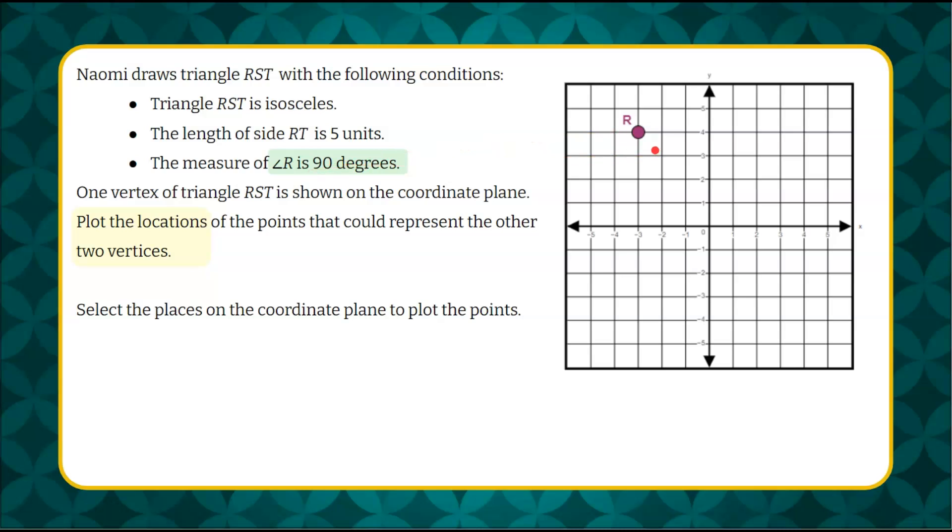So I know that when we go to draw in our sides, our line segments for the sides of triangle RST, that this angle formed by the two segments needs to be 90 degrees. When you put a square in the corner, that represents a measurement of 90 degrees in a geometric figure.